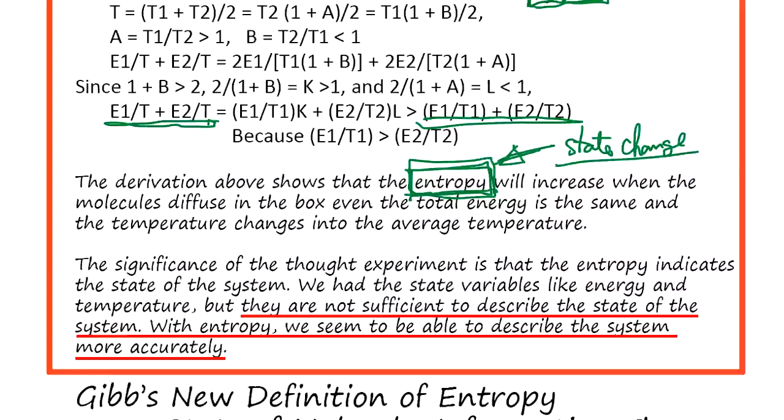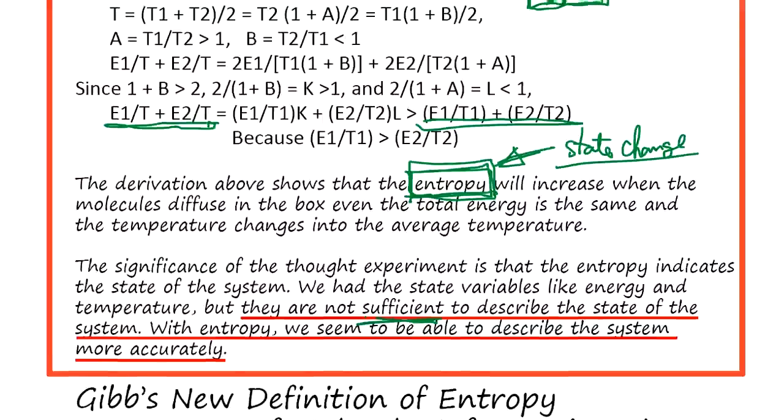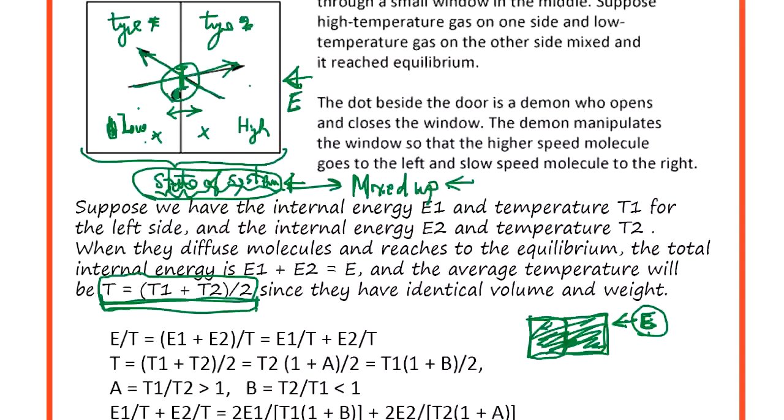So the scientists believed the temperature, energy, those all the parameters used in thermodynamics, they are not sufficient to describe the state of the system. Something else is necessary, and something to do with separation of gas molecules and stuff.